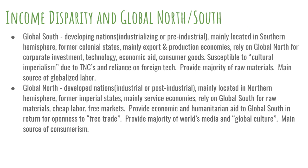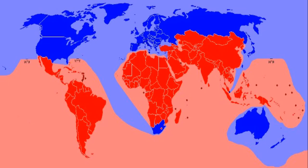The global north also provides the majority of the world's media and globalized culture. This is the main source of consumerism — these are the areas that drive the global marketplace. This map shows the dividing line between the global north and the global south, although that line is changing. The fact that China is still colored red shows the map is a couple of years old. China would now be considered part of the global north as a fully industrialized state, and some southeast Asian countries would also be starting to shift.